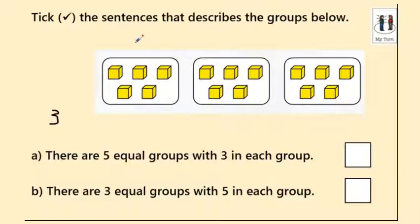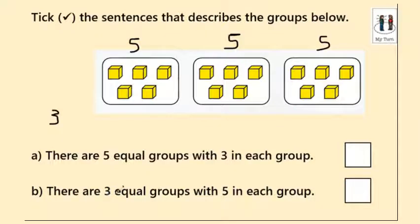And counting each group: there are five in the first group, five in the second group, and five in the third group. So I've got three groups of five — there are three equal groups with five in each group. I've got the right numbers but the wrong way round in option A. I've only got three groups as you can see, so it's being careful about the correct way round.